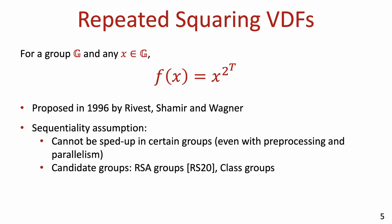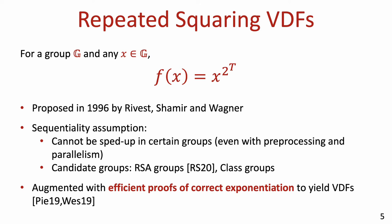We currently have two main families of candidates for such groups. The first is the family of RSA groups and specific subgroups of RSA groups. For this family, a recent result of Gil Segev and myself showed an equivalence in the generic ring model between the sequentiality of repeated squaring and the factoring assumption. The second candidate family is the family of class groups of imaginary quadratic number fields. Indeed, several works starting with Pieczak and Weselowski constructed VDFs based on the repeated squaring delay function, and the basic idea is to augment this function with efficient proofs of correct exponentiation.